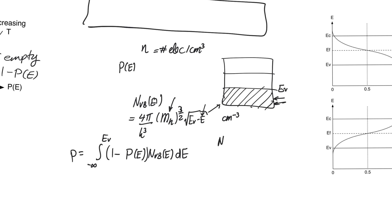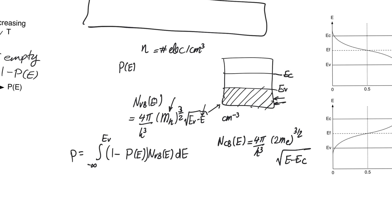Likewise, in the conduction band, there is a density of states function NCB(E). It has similar parameters: the effective mass of electrons Me, and Ec, the edge of the conduction band — the lowest energy level in the conduction band. The probability of finding an electron at such an energy level is p(E), so the concentration of electrons at a certain energy level is p(E) times NCB(E). To find electrons in the entire conduction band, we integrate from Ec to infinity.